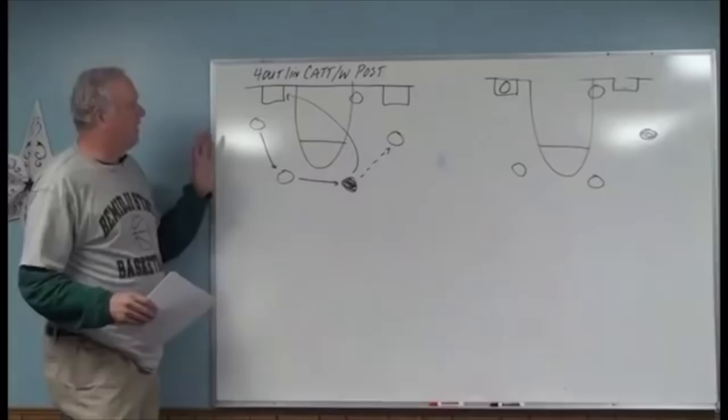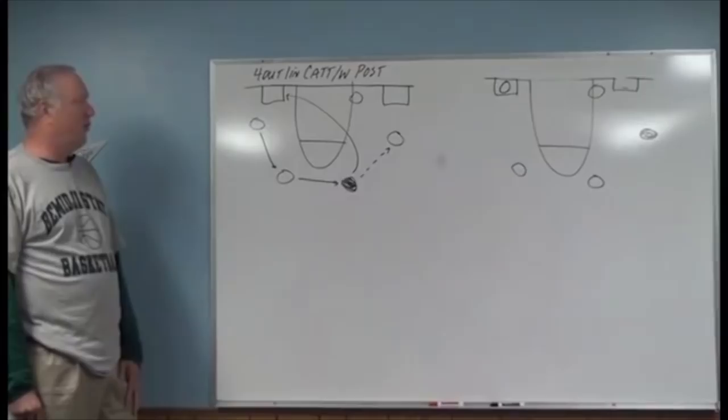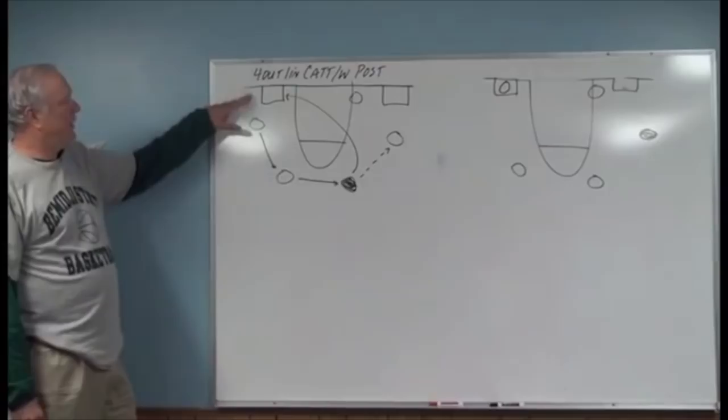As I look at the board, you can come down in a variety of different sets — for example, a four-out one-in. Two spots on each side of the lane are called the 'no man's zone.' That no man's zone is a place where we like to get people away from the basket.